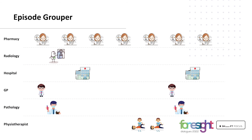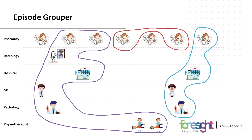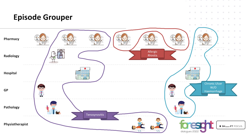Going through a real-world example — we've got a couple of pharmacy claims, some radiology claims, two hospital admissions, two GP consults, pathology and some physiotherapy claims. The EPG allows us to group these claims into specific episodes of care, as shown with the purple, red and blue groupings. It uses clinical coding, medication ATC classes and RPL codes to clinically define the episodes of care. Notably, the episode grouper allows for a couple of episodes to run concurrently.